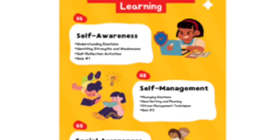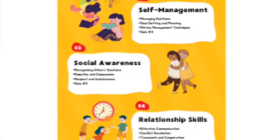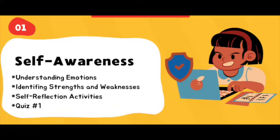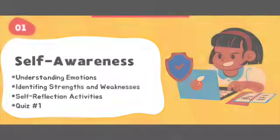This course is divided into five modules and finishes with a final project. Let's take a closer look at each module. Module one is all about self-awareness. In this module, we will learn how to understand emotions, identify strengths and weaknesses, and have some self-reflection activities before we conclude with quiz number one.